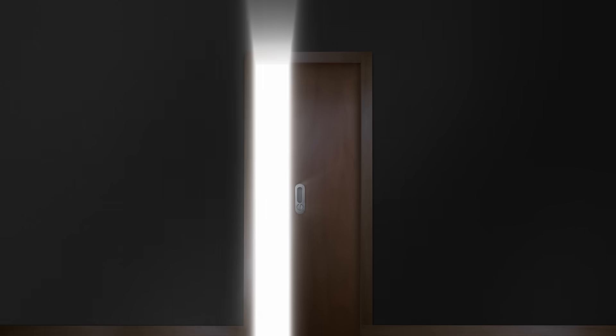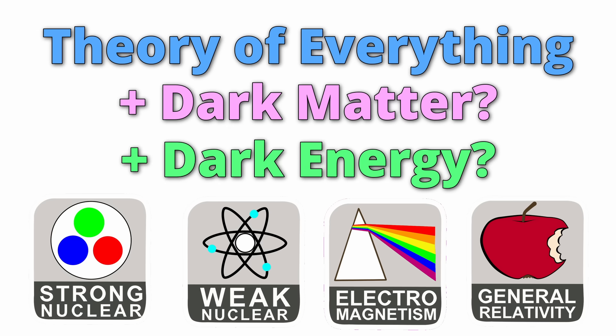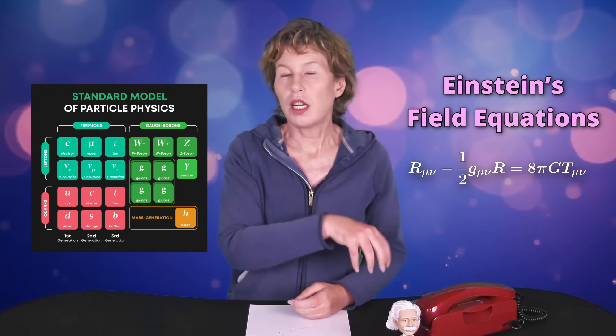The theory of everything we're looking for should describe all the fundamental interactions and all the particles in the universe in one consistent framework. A lot of physicists hope that once we succeed with that, we'll also get dark matter and dark energy out of it. But right now, we have two major frameworks: the standard model of particle physics and general relativity.